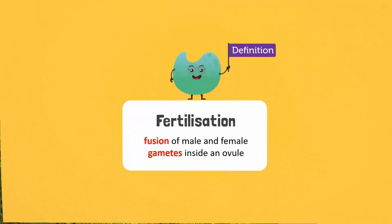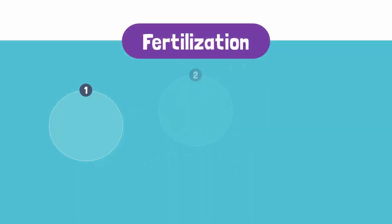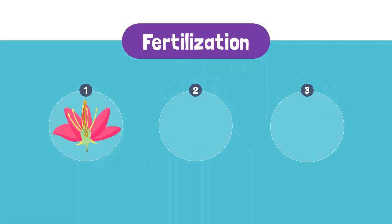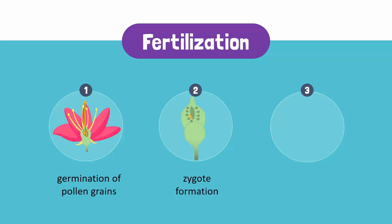Fertilization is the fusion of male and female gametes that occurs in the ovule of a flower. Fertilization takes place in three steps: the germination of pollen grains, zygote formation, and finally, embryo formation. Let's take a look at each step.